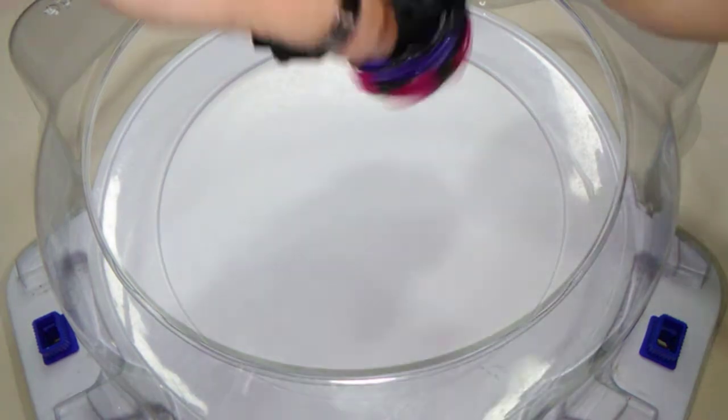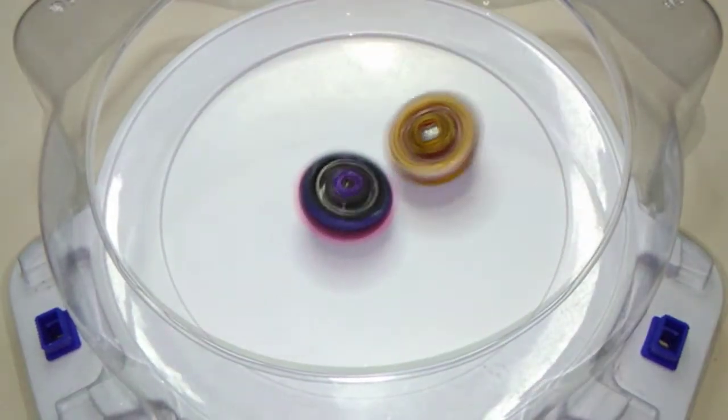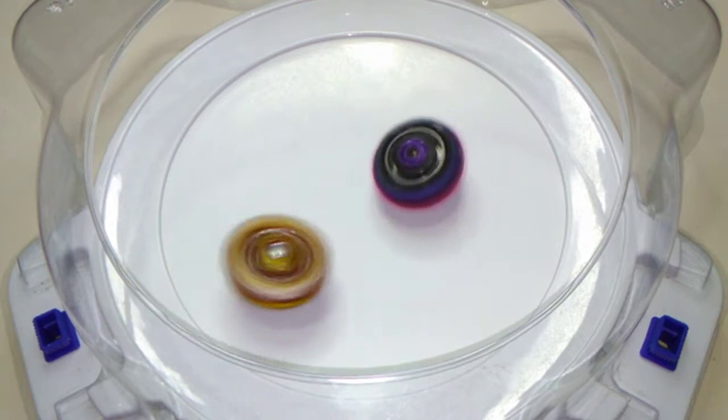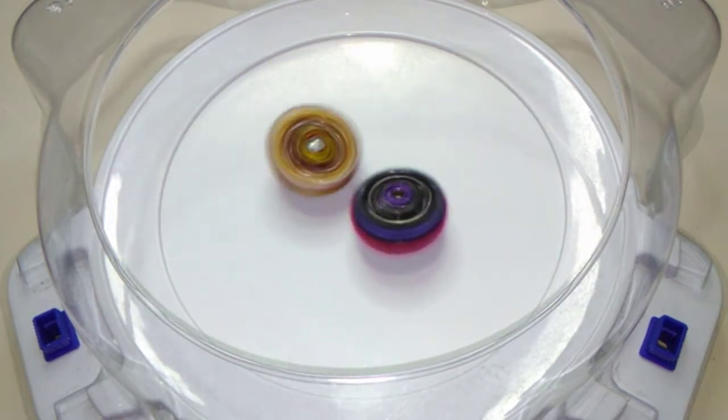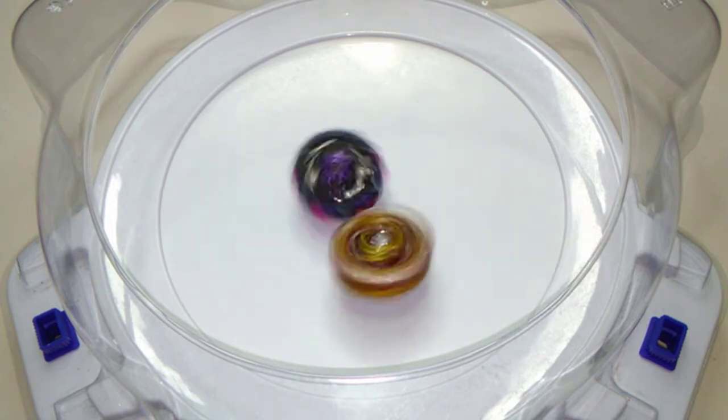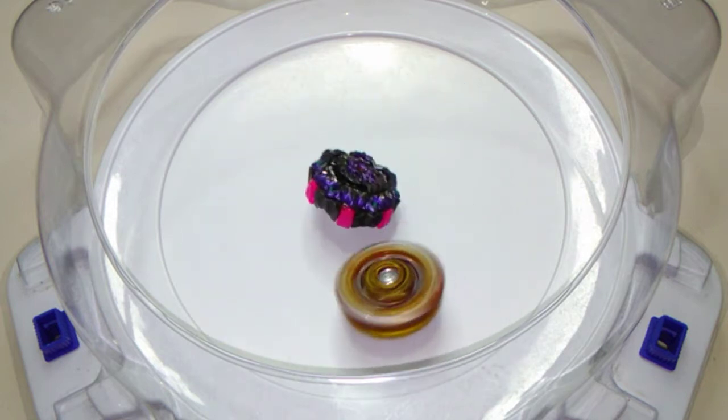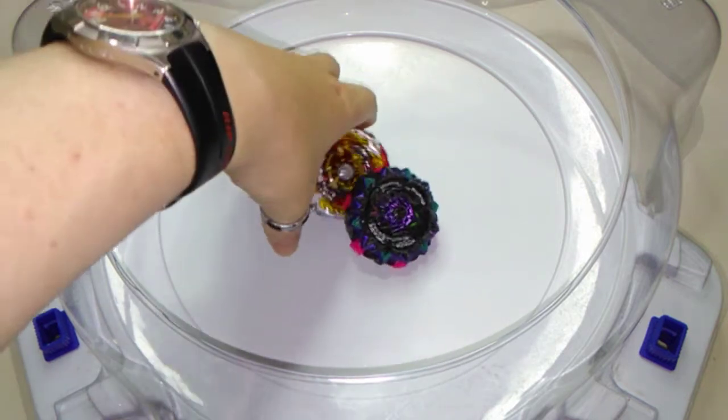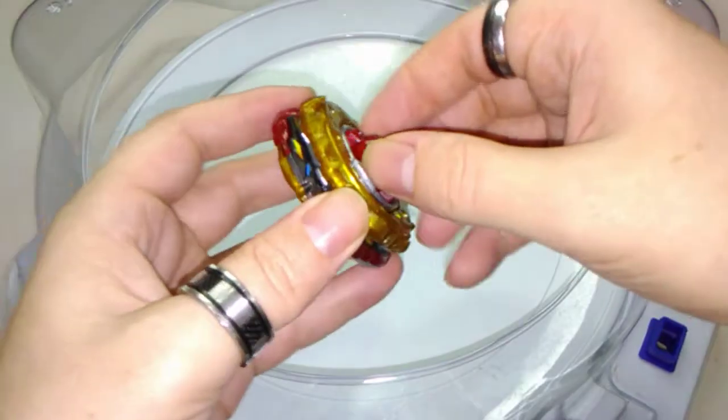Round two, there we go. Once again, going on the attack is World Spriggan and glancing off that barrier of Variant Lucifer's, but this time he has enough in him to pull out his own spin finish. That's two rounds.